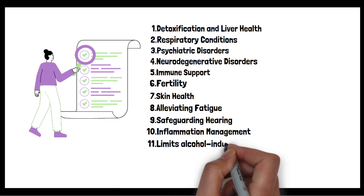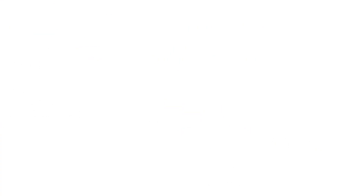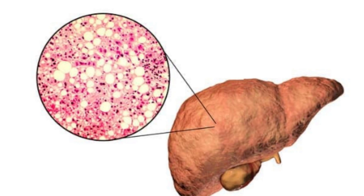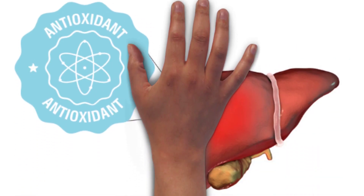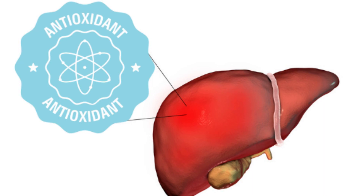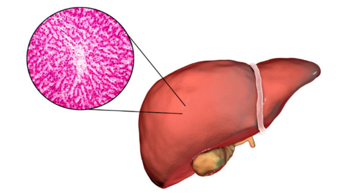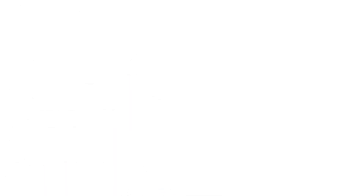11. Limits alcohol-induced liver damage. NAC has been researched for its potential benefits in managing non-alcoholic fatty liver disease, NAFLD, and its more severe form, non-alcoholic steatohepatitis, NASH. One of the critical mechanisms contributing to the progression of NAFLD to NASH is oxidative stress, which damages liver cells and leads to inflammation. NAC is a precursor to glutathione, one of the body's primary antioxidants. By replenishing glutathione levels in the liver, NAC can help counteract oxidative stress, potentially preventing or reducing damage to liver cells. NAC's potential to decrease inflammation may be tied to its ability to neutralize harmful molecules, boost antioxidant levels, and regulate certain cellular processes.